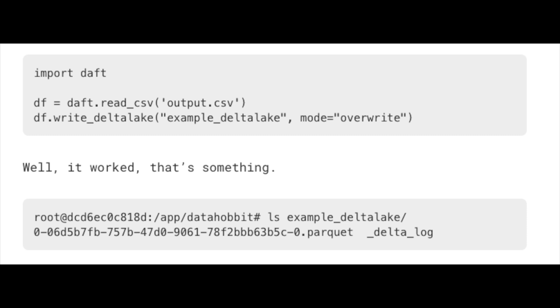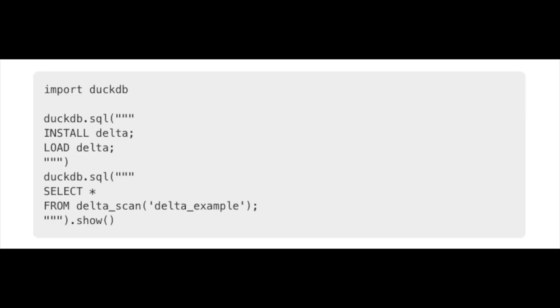I used a tool called Daft — a DataFrame Rust-based Python tool — to read that CSV file and dump out a Delta Lake table locally on my laptop. The DuckDB code is very clean: just import DuckDB, install delta, load delta, and you can do a SELECT * from scan_delta pointing at the Delta Lake location. It works pretty well — easy setup, a good sign for the integration.